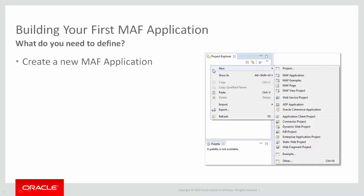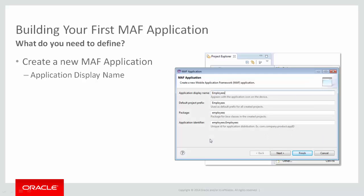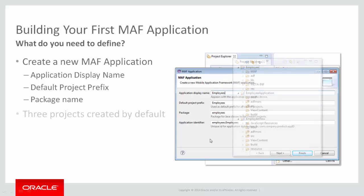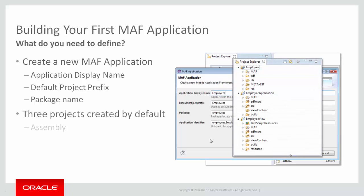So what do you need to do? First, right-mouse click in the Project Explorer, and from the context menu, select New, MAF Application, and click OK. OEPE will then ask you to define some basic information about the application, including its name, the default project prefix, and package name. By default, three projects are created: the assembly project, the application project, and the view project. If you like, you can always change the names of these projects to meet your company's naming standards. A project is simply a container for the application source code.